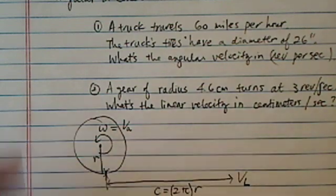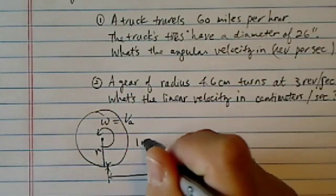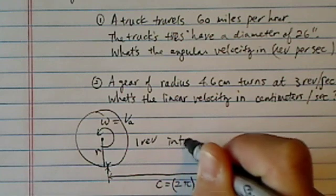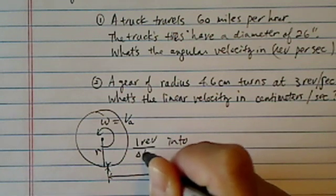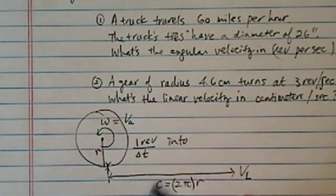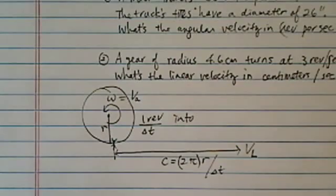This is how you really convert one revolution, one rev, into one rev per unit of delta time into linear velocity, which is circumference over the same delta t. That's really it.